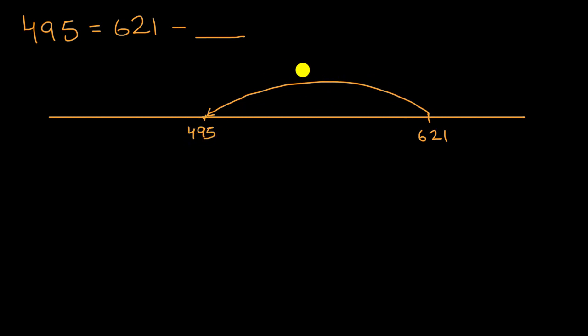Now what amount did we subtract? So here we are subtracting blank. That's my blank over there. And so we need to figure out what that is. So how do you go from 621 to 495?